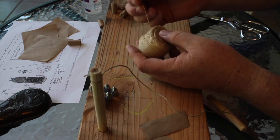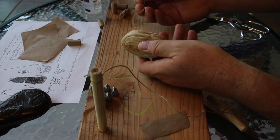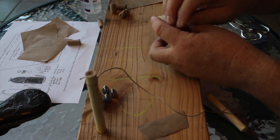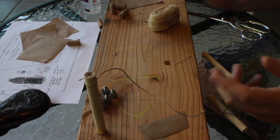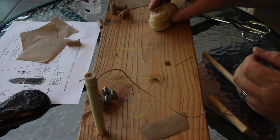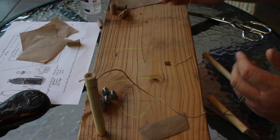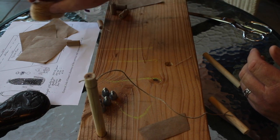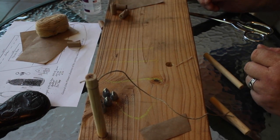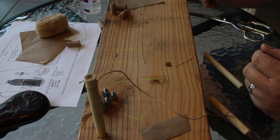I'm using some unbleached linen thread to do my tying. Any type of natural thread will work. You could use cotton kite string if you choose. But I always prefer to use what they use. They would have used a linen base. You can use cotton though. Just don't use rayon or something like that.